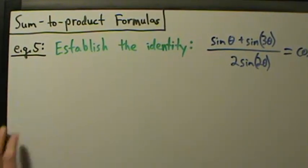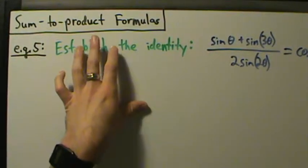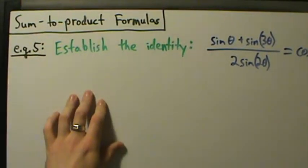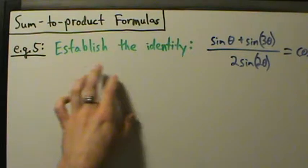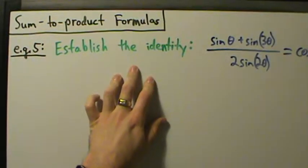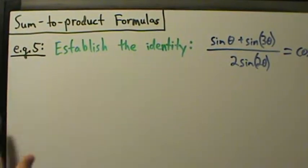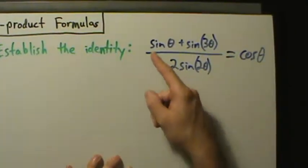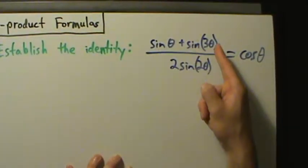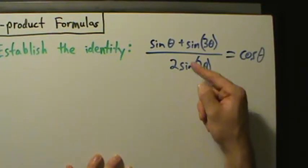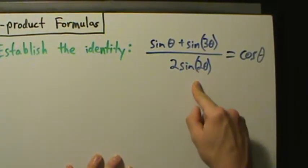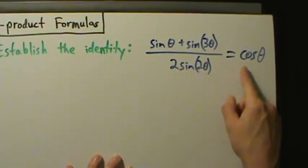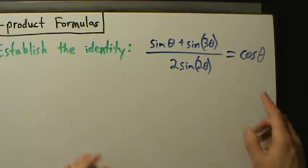Here's example five of using sum to product formulas. This is going to be an establish the identity type of problem. The identity we want to establish is sine of theta plus sine of three theta, all divided by two sine two theta, equals cosine of theta.